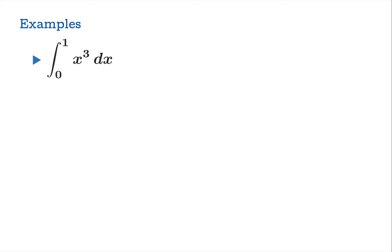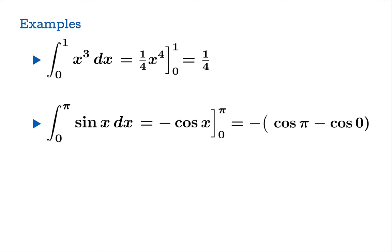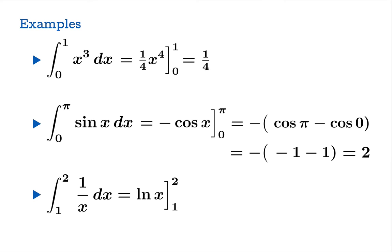Let's test drive the theorem and the notation. What is the definite integral of x³ from 0 to 1? The antiderivative is ¼x⁴; plugging in 1 and 0 and subtracting gives ¼. How about the integral of sine from 0 to π? The antiderivative is negative cosine x; plugging in π and 0 and subtracting gives 2. How about the integral of 1/x on the interval from 1 to 2? An antiderivative is ln x; evaluating gives ln 2 minus ln 1, and since ln 1 equals 0, the definite integral equals ln 2.